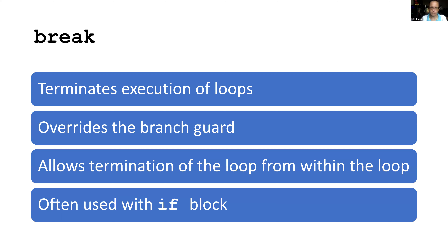Let's continue on with while loops with break. Break is a Python keyword that terminates the execution of loops — it overrides the branch guard. So once you encounter the break, thinking about that imaginary pointer going along and encountering the break command, it is going to stop the execution of the loop whether or not the branch guard is true — it doesn't matter.